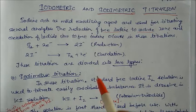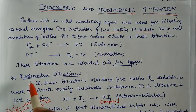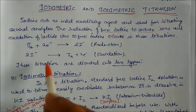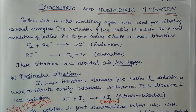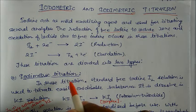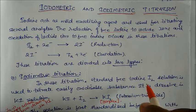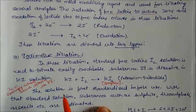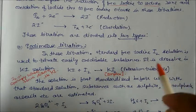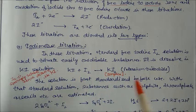First is iodimetric titration — note the difference: one has 'iodi' and the other has 'iodo'. In iodimetric titration, a standard free iodine solution is used to titrate easily oxidizable substances. Here we use iodine directly.